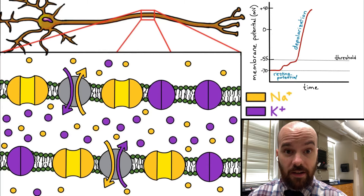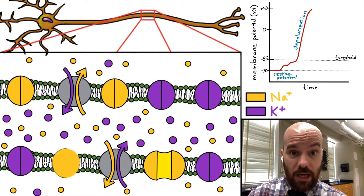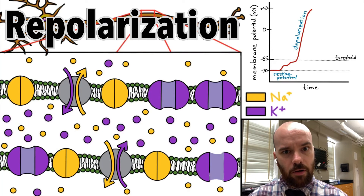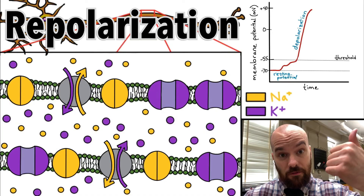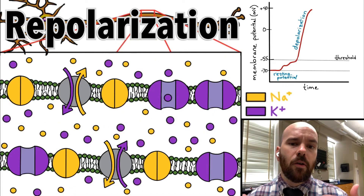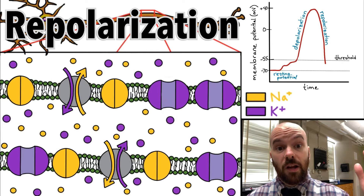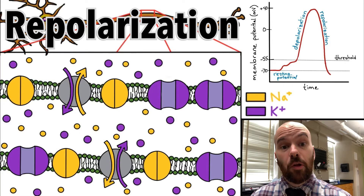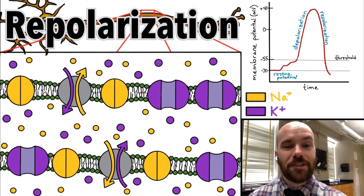After this section of axon has depolarized, the sodium channels are going to close and then the potassium channels open — we call this stage repolarization. Because the concentration gradient for potassium has most potassium on the inside, potassium is going to flow out of the neuron. With positive charges flowing out, the axon becomes more negative, causing the voltage to drop back down — slightly below the resting membrane potential. Potassium keeps flowing out until concentrations equalize, eliminating the potassium concentration gradient.